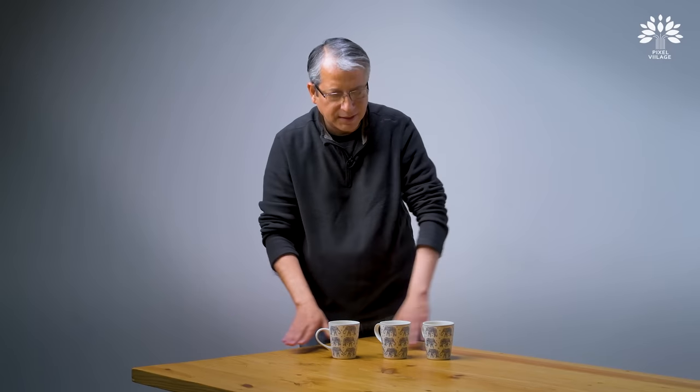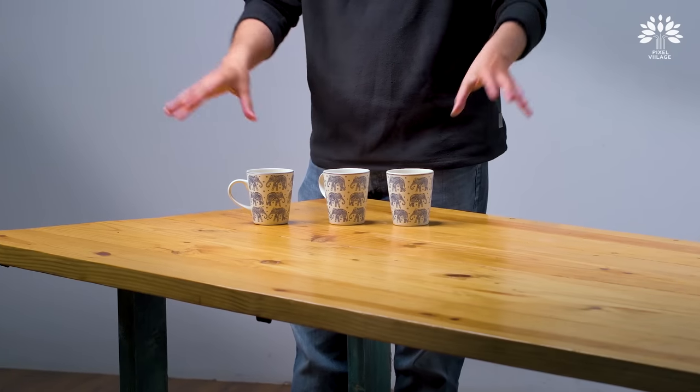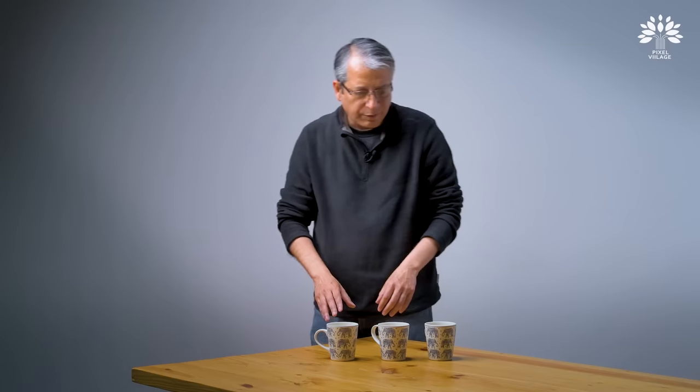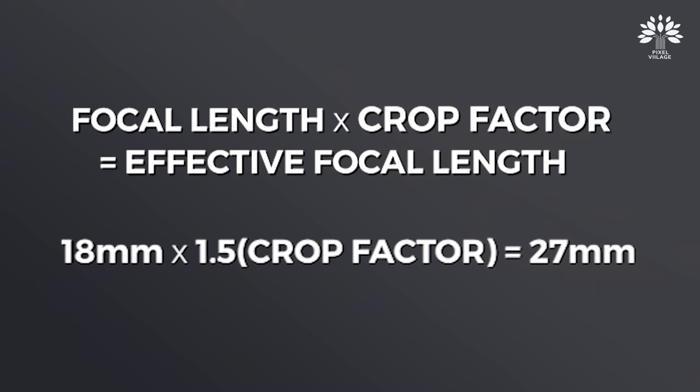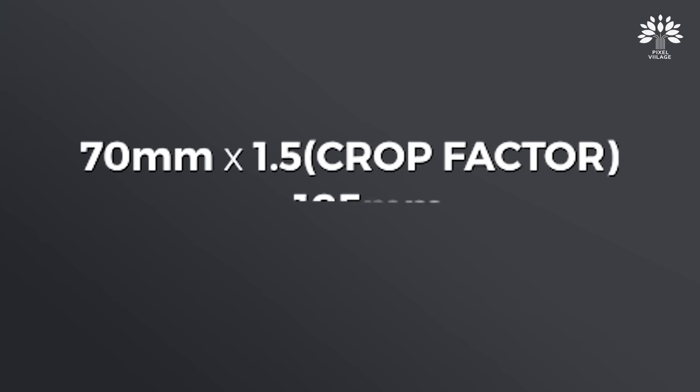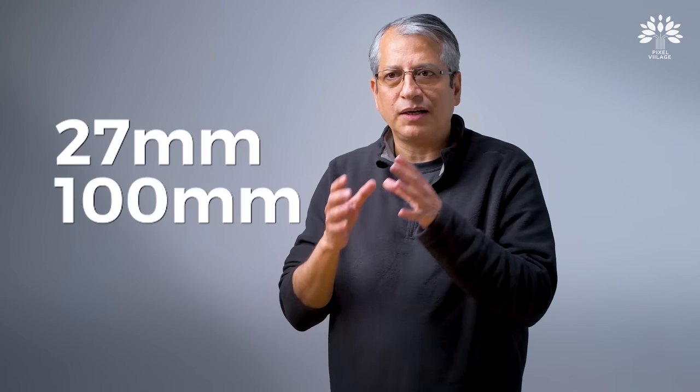We have created a small setup here. I am using three cups which are exactly identical — same shape, same color, same pattern. There is a small wooden base which will add some character to the setting. I am using continuous available light. I am going to take two shots: one at wide-angle, approximately 18mm focal length equivalent to 27mm on a full-frame camera, and another at around 70mm focal length, which is roughly 105mm on a full-frame camera.